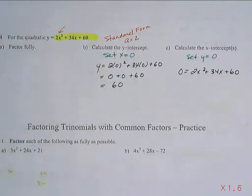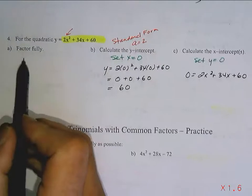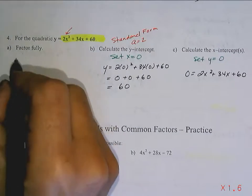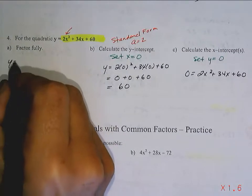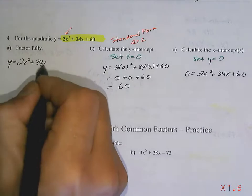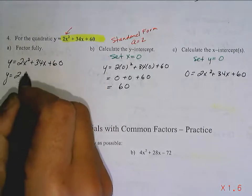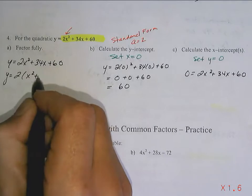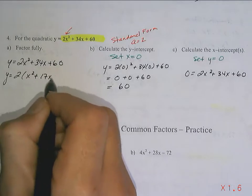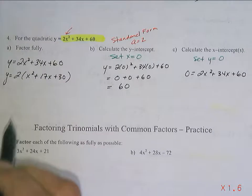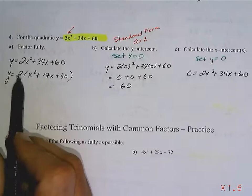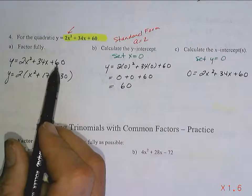So, I'm going to have to factor this. I'm going to come over here and do my factoring, because there's more room. So, I'm going to take 2x squared plus 34x plus 60. And the first thing I'm going to do is common factor. So, I noticed that I could take a 2 out of 34 and out of 60 evenly.